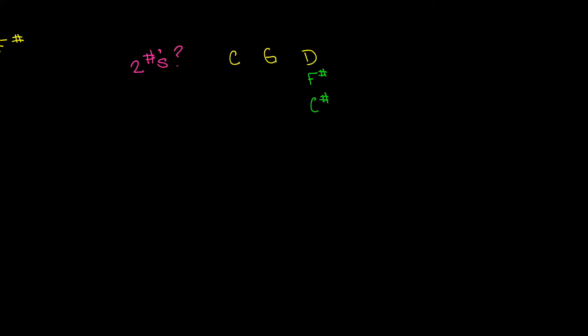And so then you go, well, what's the scale? Let's build it very quickly. And you'd go, well, the scale here would be, for D major, D, E, F sharp, G, A, B, C sharp, and back to D. And there you have it.